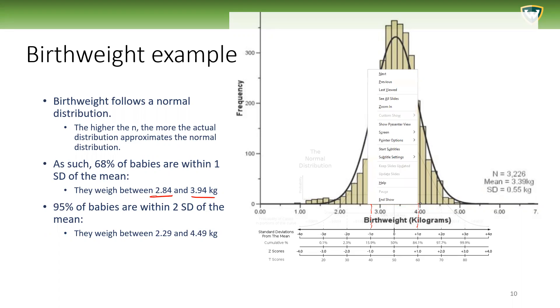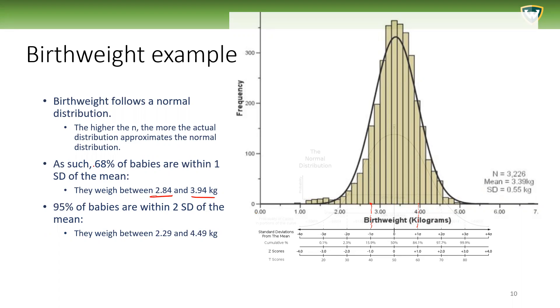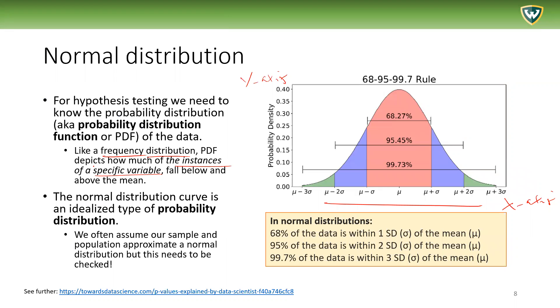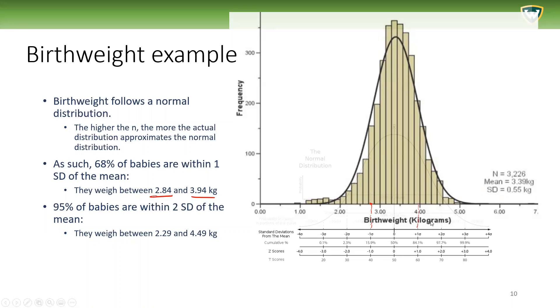This is information about the general normal distribution. 68% of the data is within one standard deviation. We can assume because this is a very large sample and it approximates a normal distribution, that 68% of babies—that's 68% of the individuals, the individual babies—have a birthweight that is between 2.84 and 3.9 kilograms.